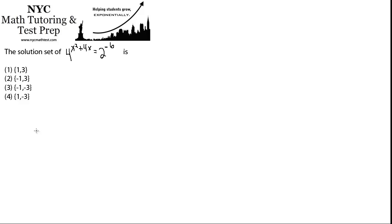The solution set of 4 to the x squared plus 4x equals 2 to the negative 6. So when you see problems like this, remember the solution set just means the values of x which make the equation true. So if it's a solution set and not just a solution, then that means there's more than one value of x that would make this true.